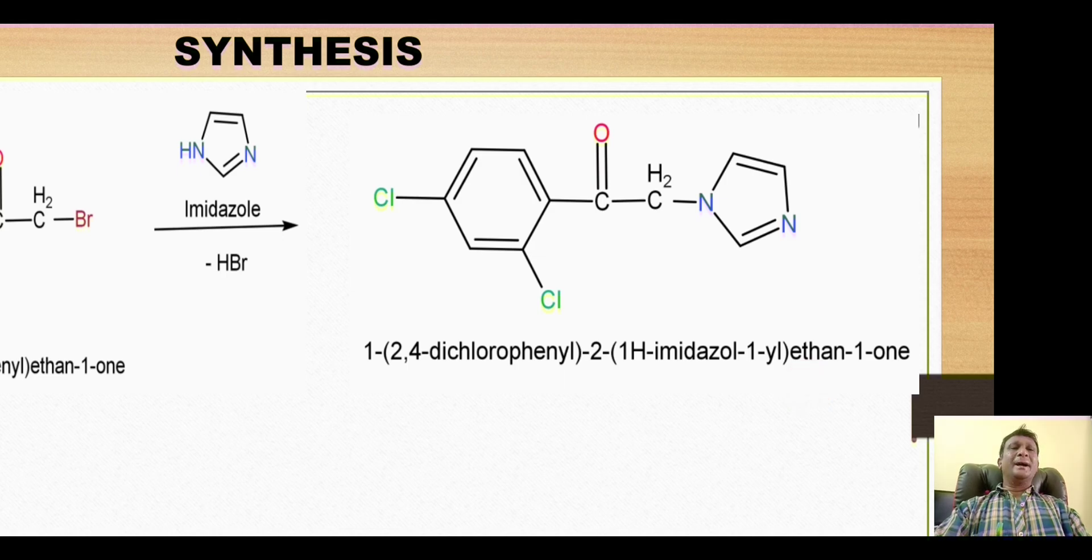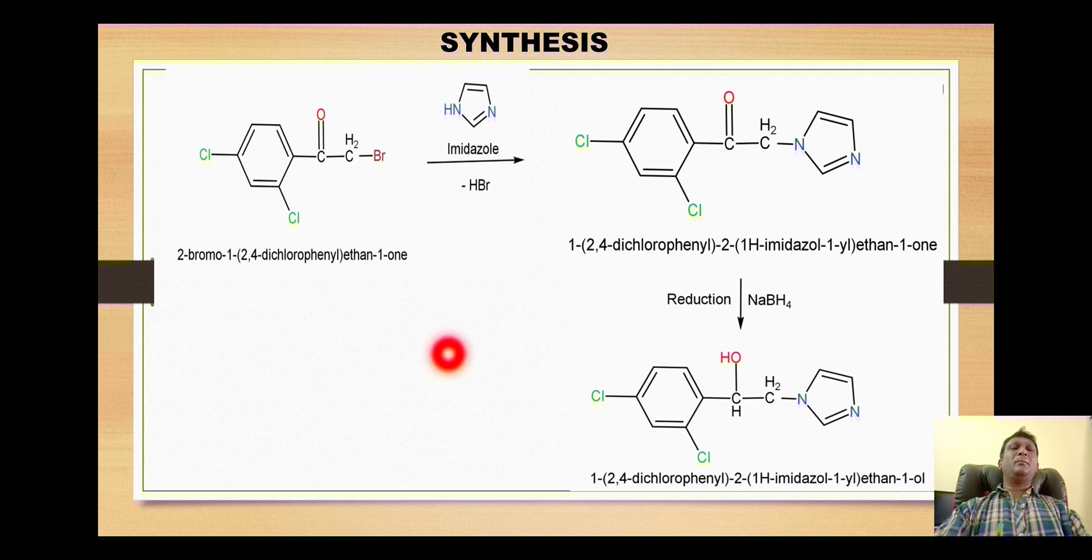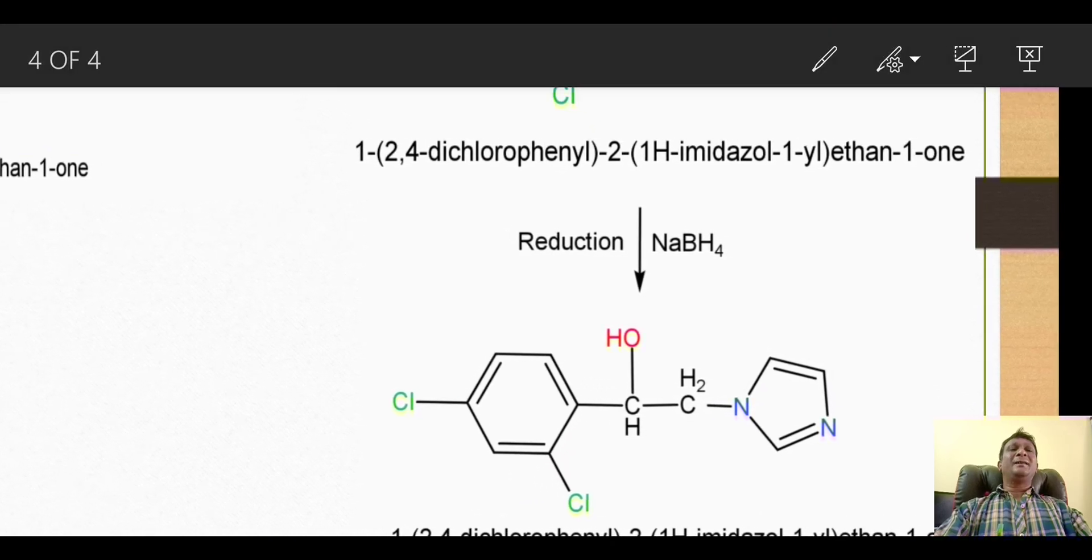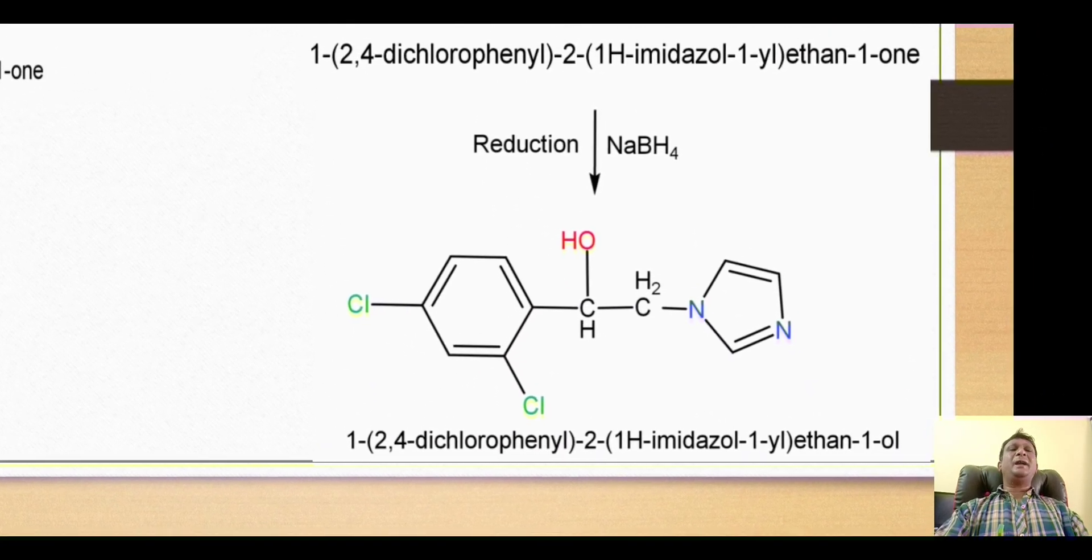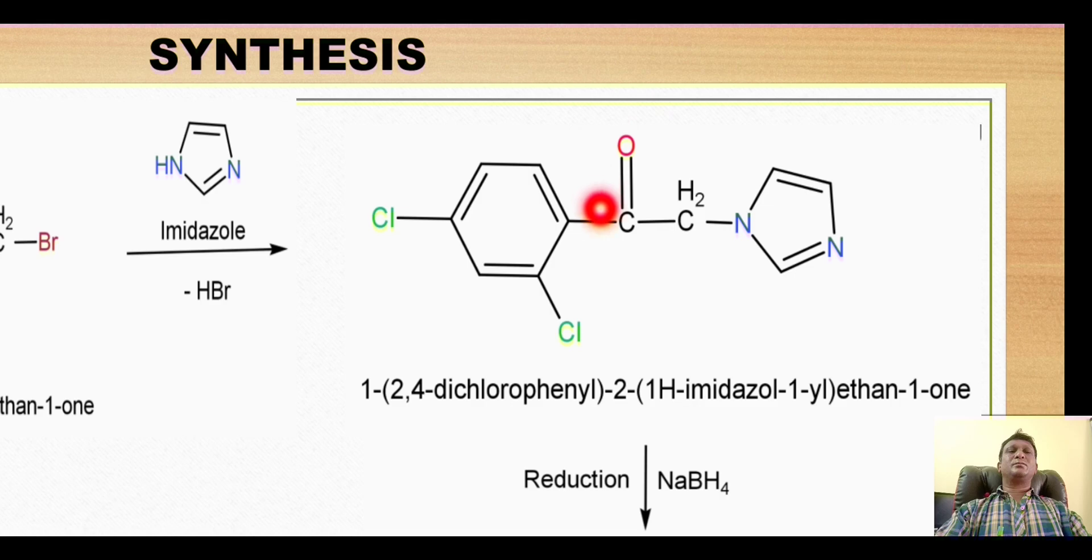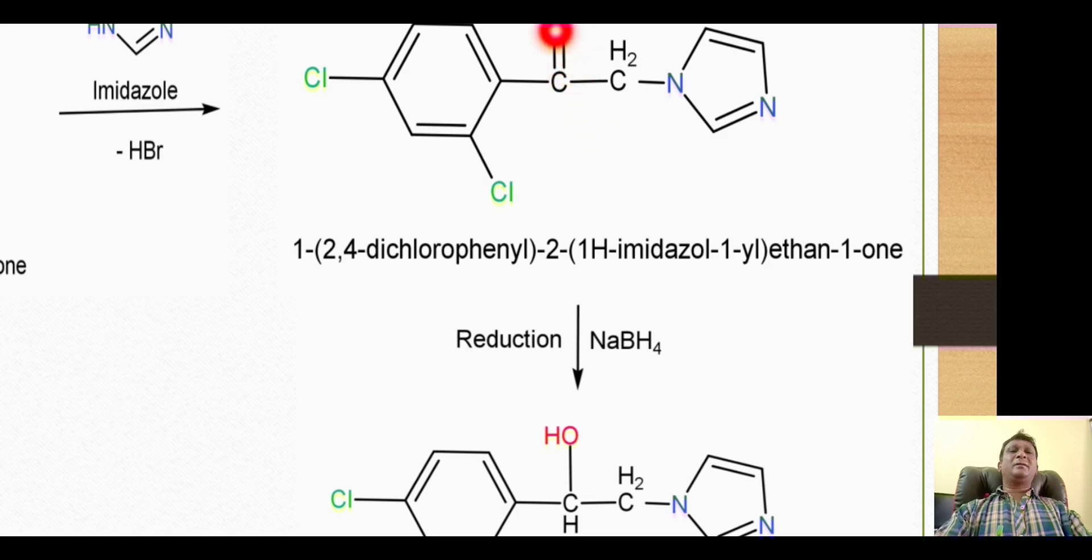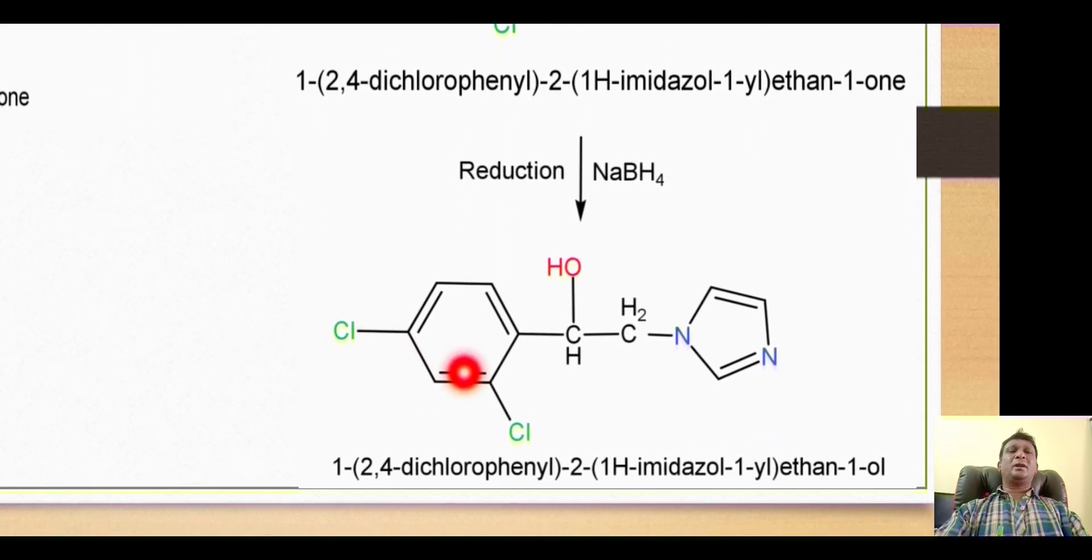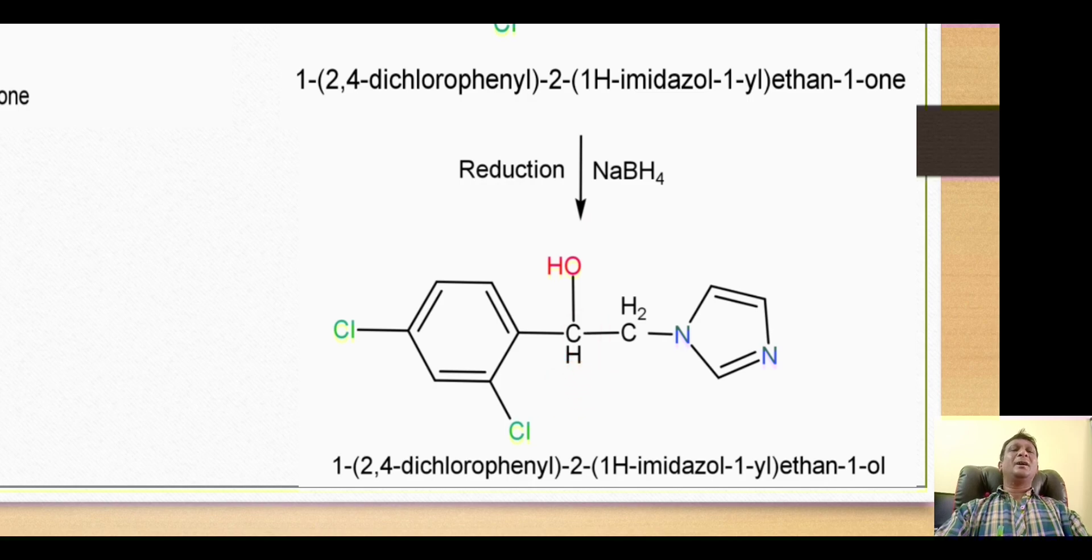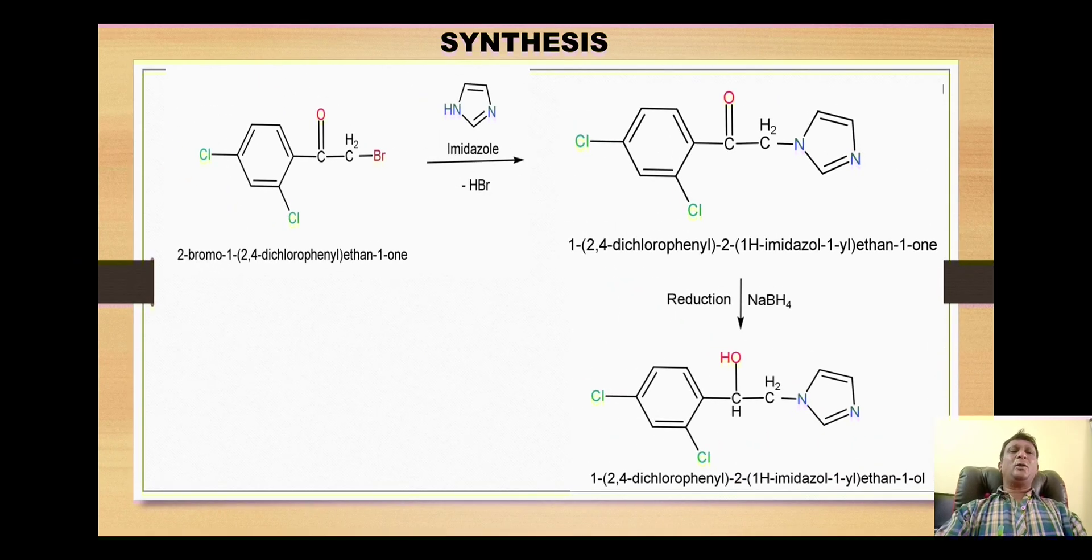Now this is a ketone, so this ketone then undergoes reduction reaction with sodium borohydride. Sodium borohydride is a highly selective reducing agent and brings about the reduction of this carbonyl group. On treatment with sodium borohydride, this carbonyl group gets converted to the corresponding alcohol. In this case it is a tertiary alcohol, so thus we get formation of this ethanol derivative.